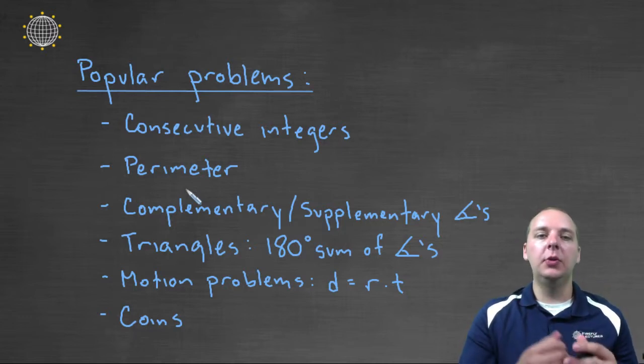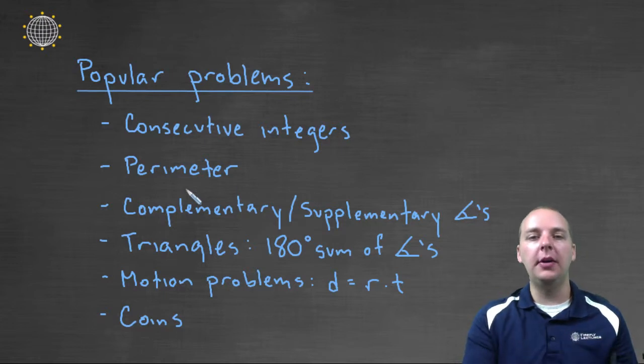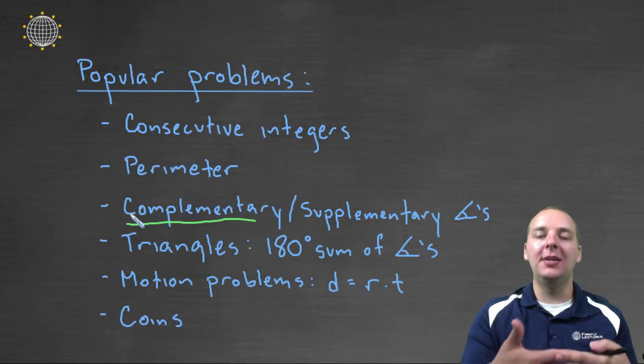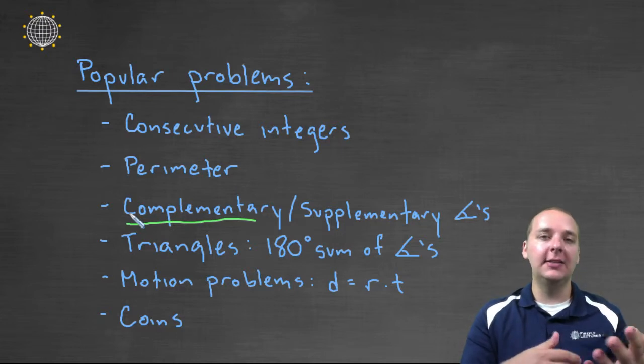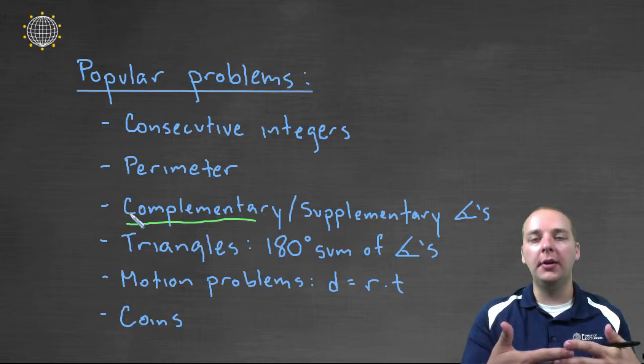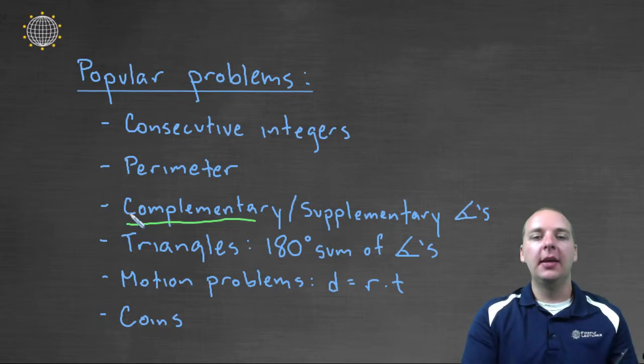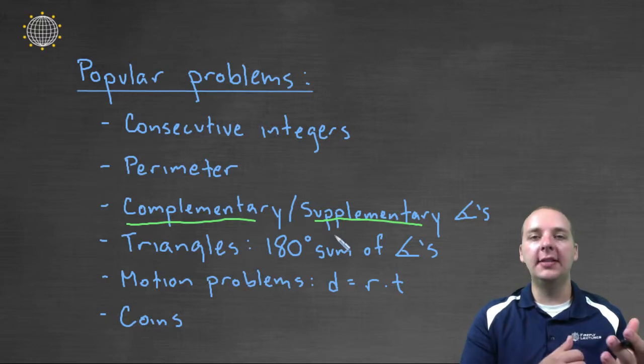You'll have a number of problems dealing with complementary and supplementary angles. Complementary basically means two angles add up to ninety degrees, like sixty and thirty are complementary because they add up to ninety. Supplementary angles add up to one eighty, so you could have like one seventy and twenty. Those angles would be supplementary.